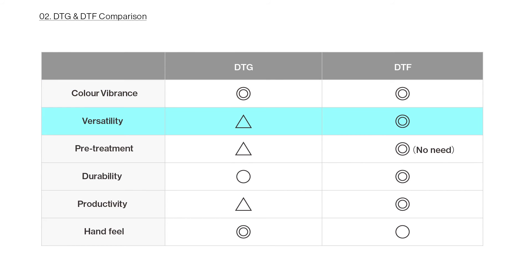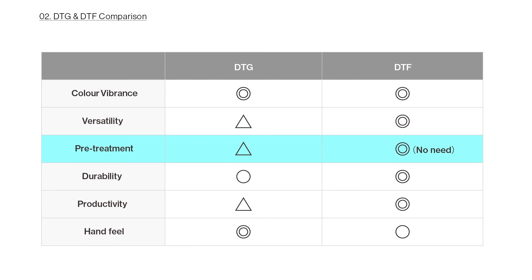One of the biggest advantages of DTF over DTG is fabric versatility. Unlike DTG, which is confined to cotton or cotton-based materials, DTF works on most fabric types available in the market. Regarding pretreatment, for white 100% cotton garments, pretreatment for DTG is not essential. But when printing onto dark or polyester fabrics, pretreatment is needed so DTG inks adhere better. DTF, however, eliminates the need for pretreatment and drying in any kind of fabric.